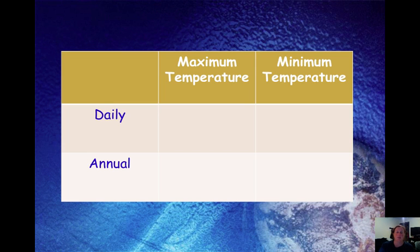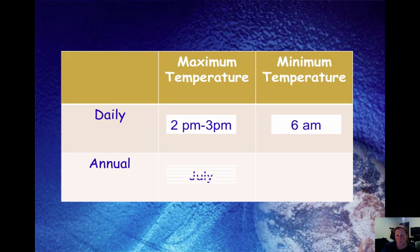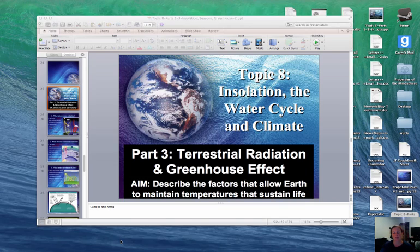To review: maximum temperature during the day occurs between 2 and 3 o'clock, and the minimum temperature is around 6 a.m. During the year, the maximum temperature occurs in July and the minimum temperature in January. That concludes our 8.3 notes on the Greenhouse Effect and Terrestrial Radiation.